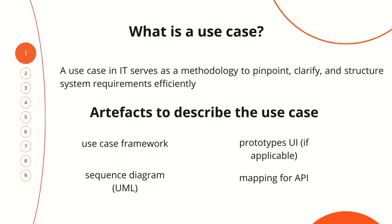What artifacts are used to describe the use case? Let's consider the main ones: use case framework, sequence diagram, prototype CE, and mapping for API.